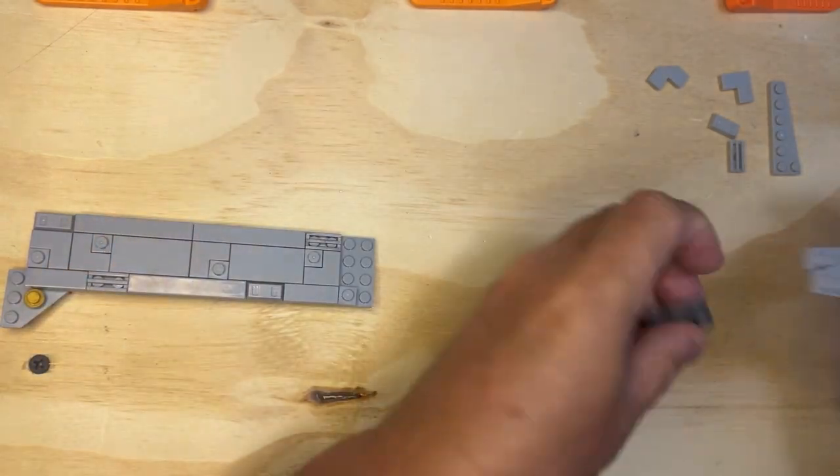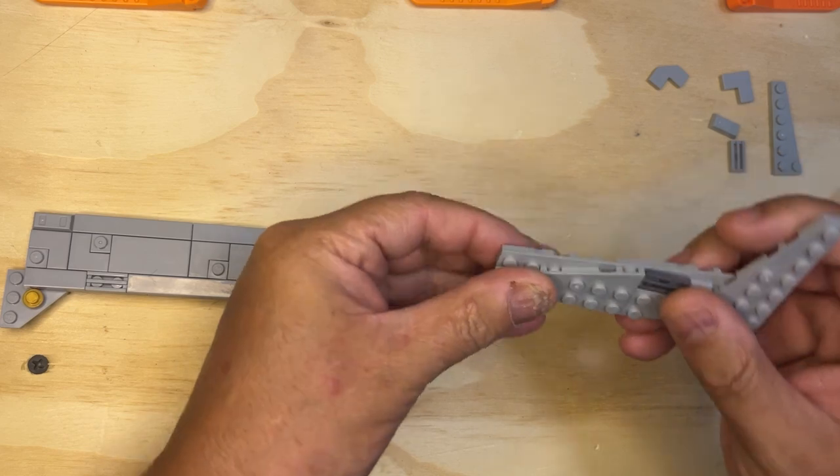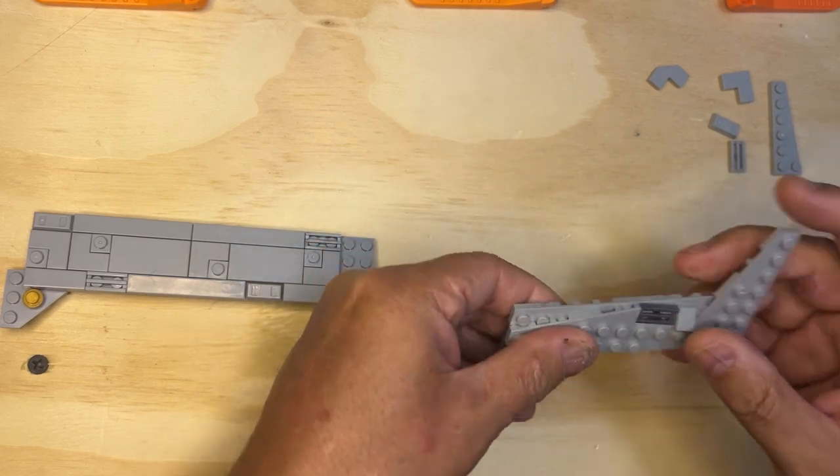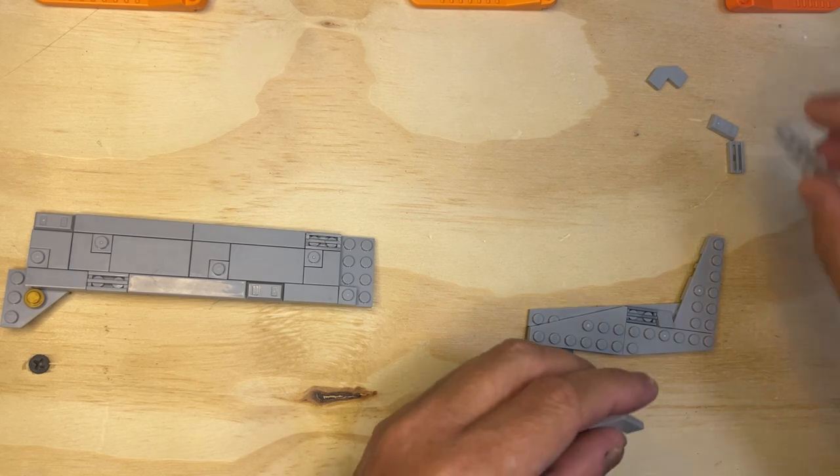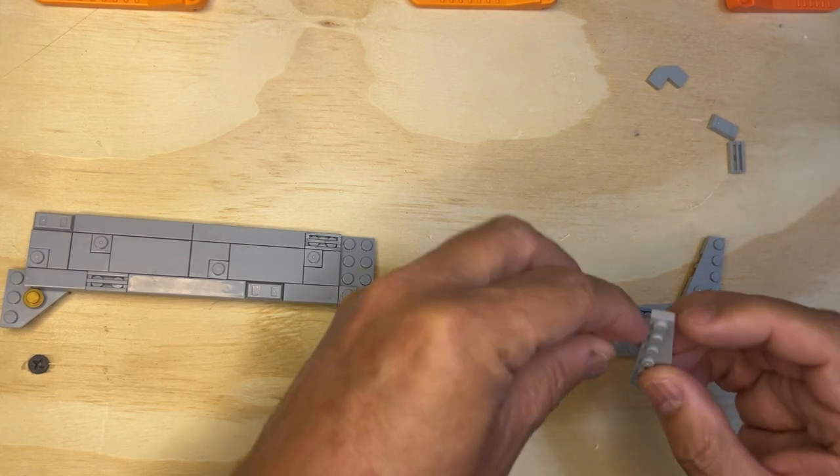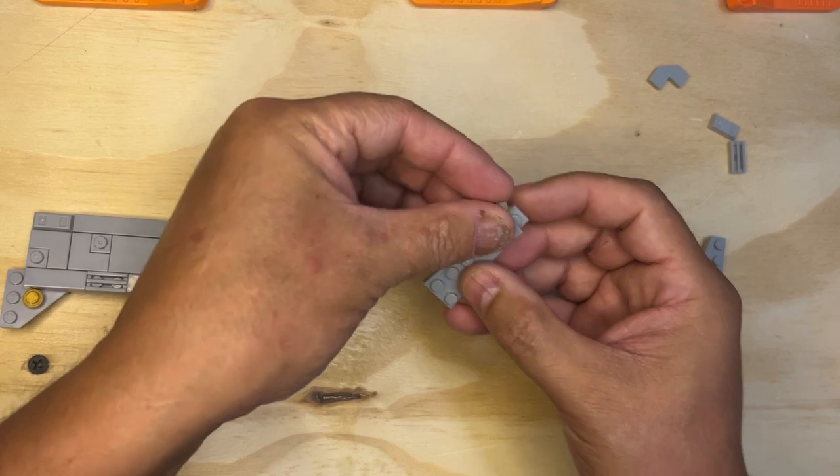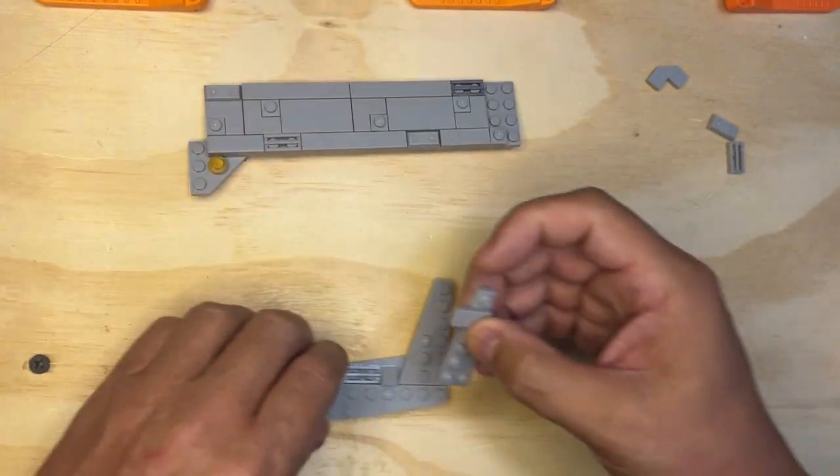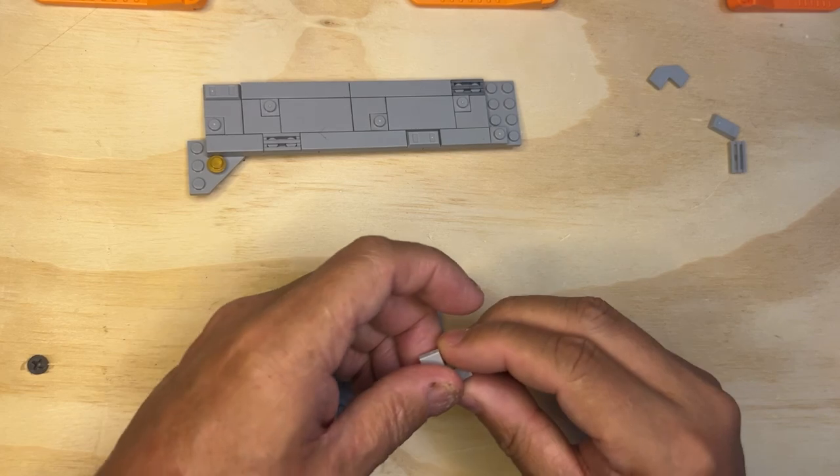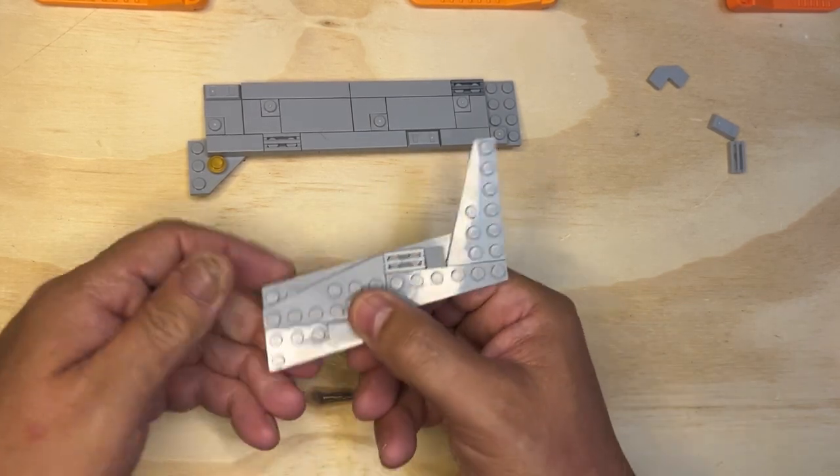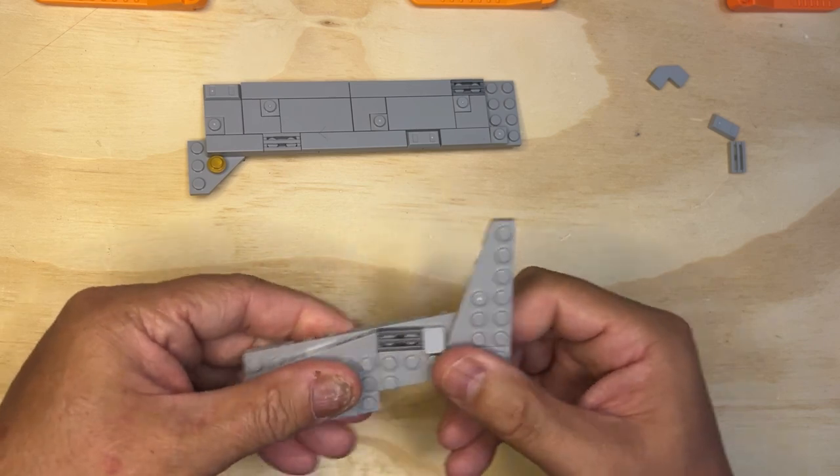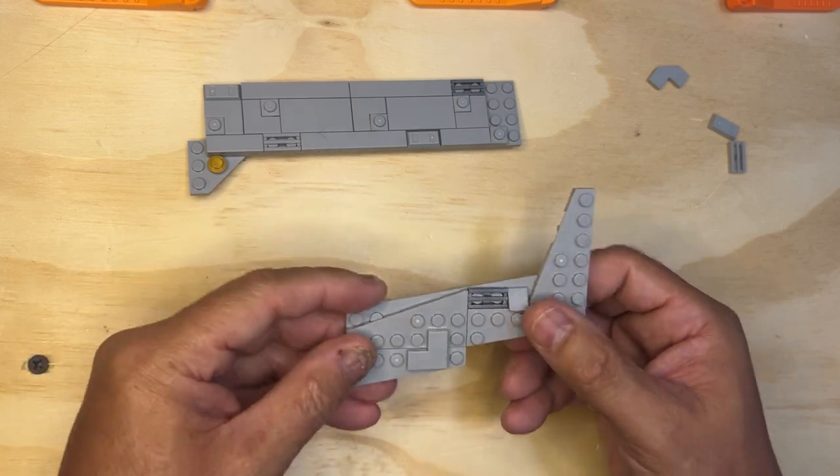And there's going to be a two by three there. And then I'm going to put it. Okay, so I'm going to put it like this. Put this out of the way for a second. And then this is going to go where? Aha! So it has it in two places to keep it sturdy. Nice, nice, nice, nice.